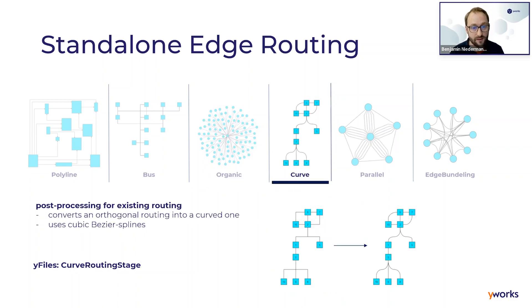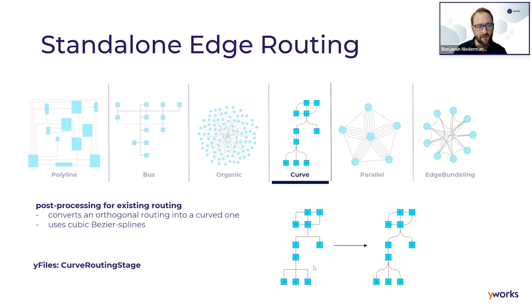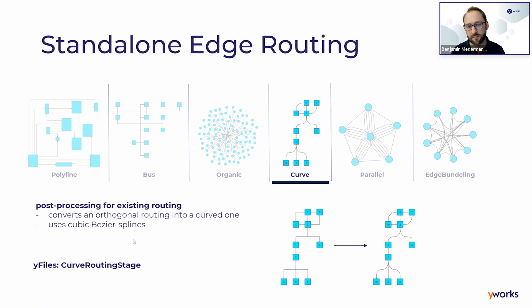The curved routing stage is applied to existing layouts — the term 'stage' indicates this. Given an orthogonal layout, it converts the orthogonal routing into a curved one by rounding off sharp bends using curves such as cubic Bezier splines, producing a smoother drawing for your graph.